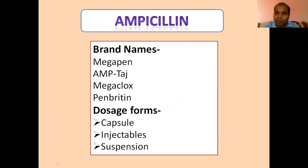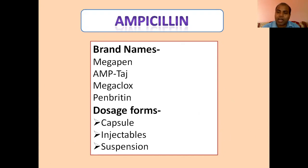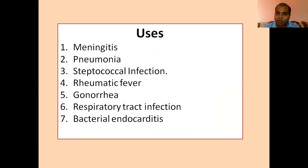The brand names of ampicillin available in the market are Megapen, Amptaj, Megaclox — which is a combination with cloxacillin — and Penbritin. These are the generally available brands of ampicillin. They are mostly available in the form of capsules, and along with capsules they are also available as injectables and suspension.